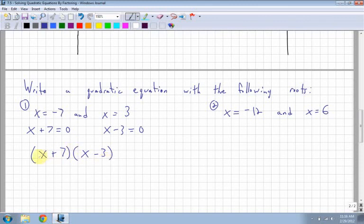You can multiply them out too if you want. x times x is x squared. x times negative 3 is negative 3x. 7 times x is plus 7x. So 7 minus 3 is plus 4x. 7 times 3 is negative 21. That's your quadratic function right there. And it's got to have those roots, x equals negative 7 and x equals 3 because that's how we built it.